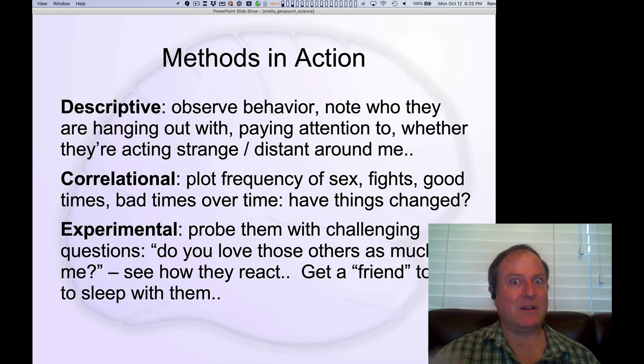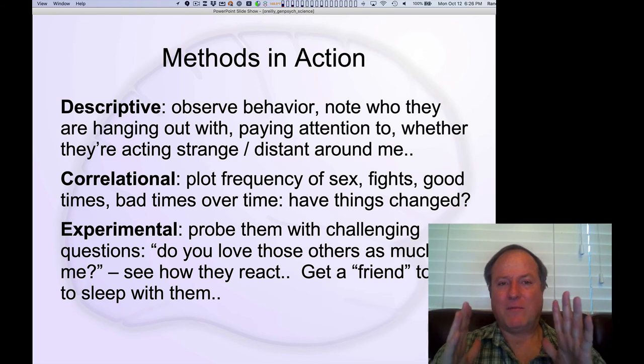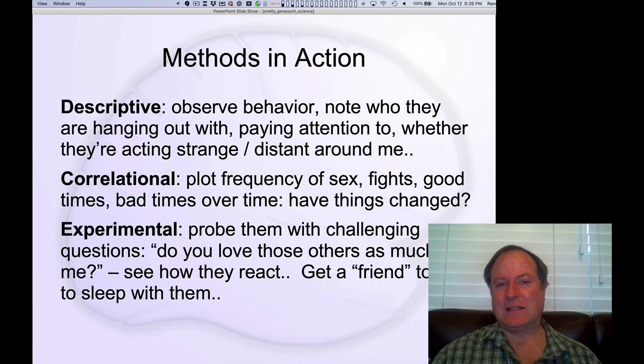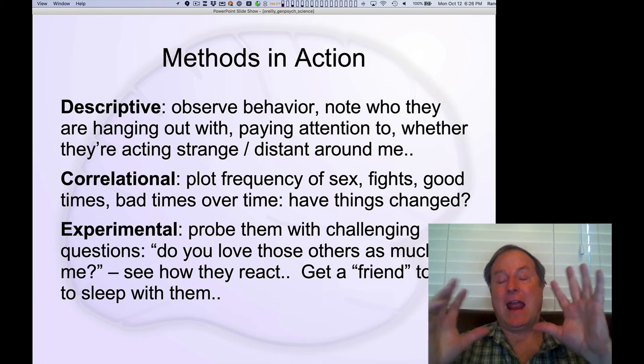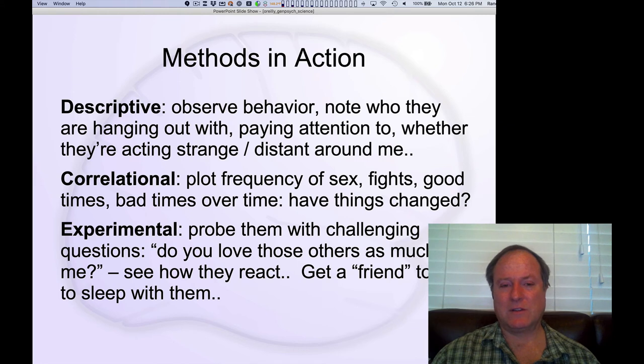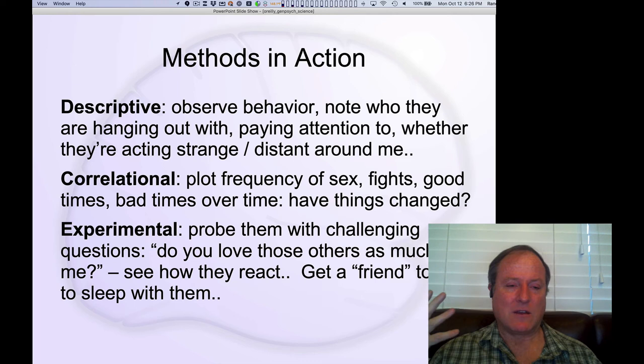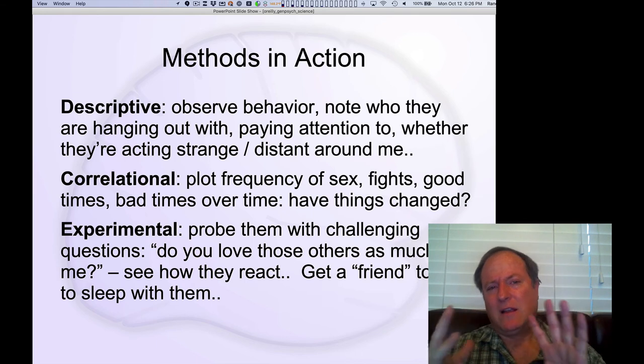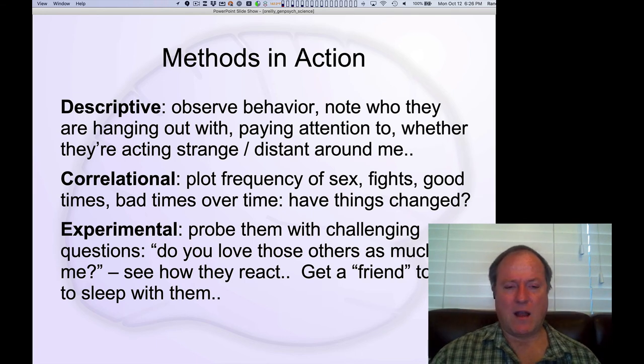And then you could try to interpret that. But again, it's not going to be very definitive data. Everything's going to be very hypothetical, unless of course you catch them in the act or something. Then you have correlational data where you say, okay, well, I'm going to actually try to plot specific variables here and see if there's an indication of a potential causal relationship. So, plot frequency of sexual intercourse or fights or good times and bad times over time and look at these historical trends and has there been a change? Is there some indication that somehow the system might have changed? And that might give you some indication of something happening.